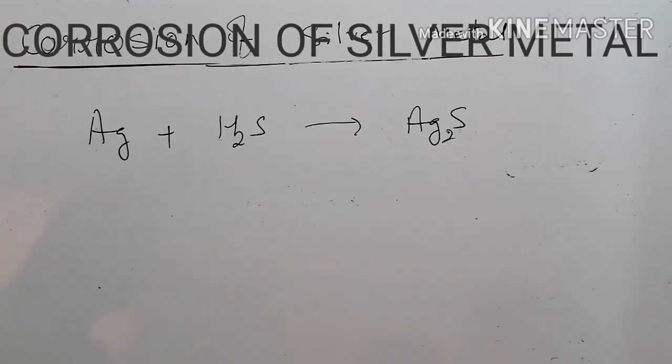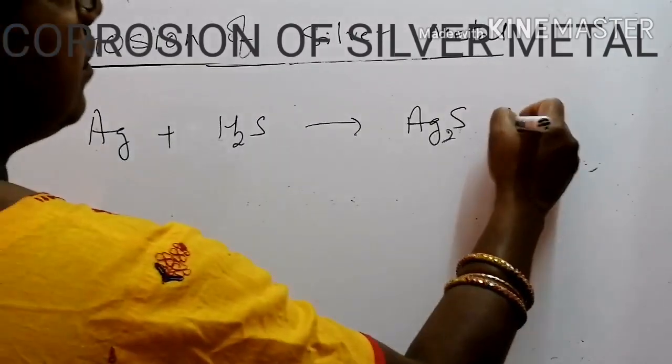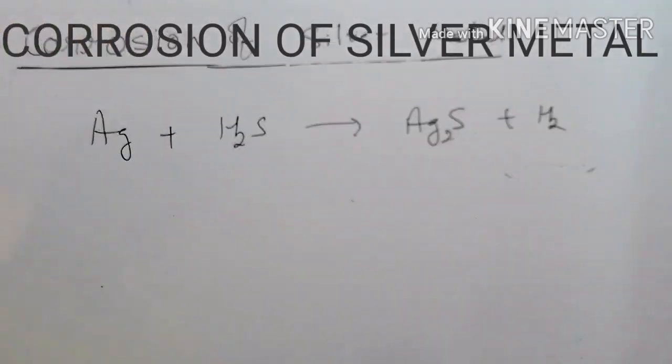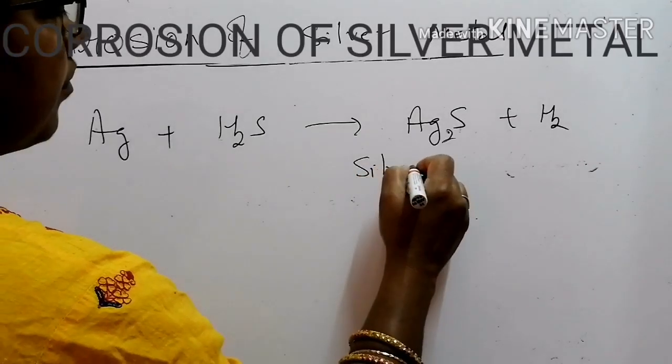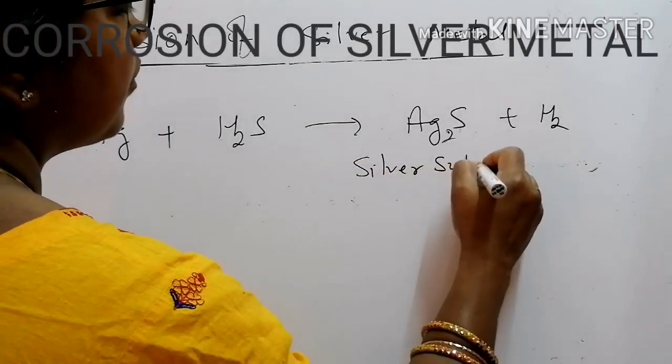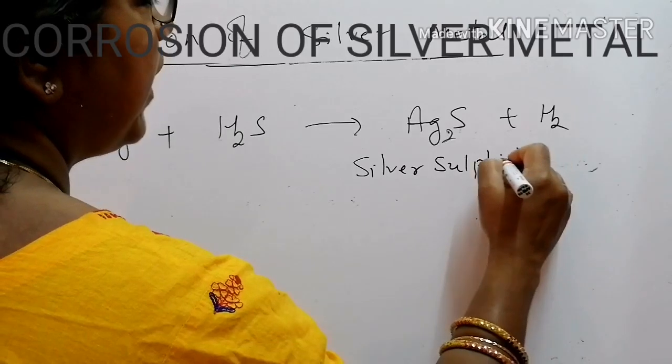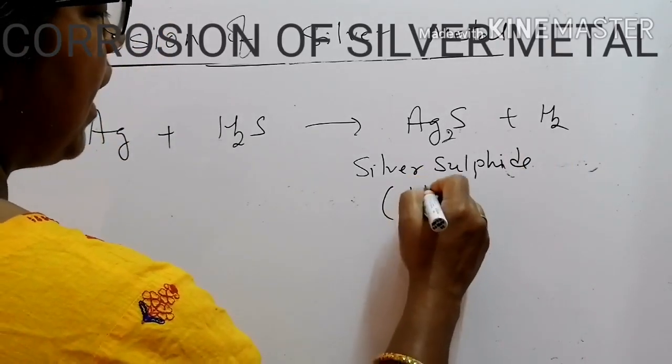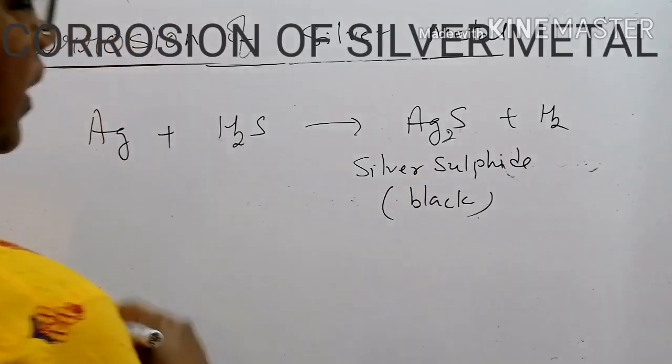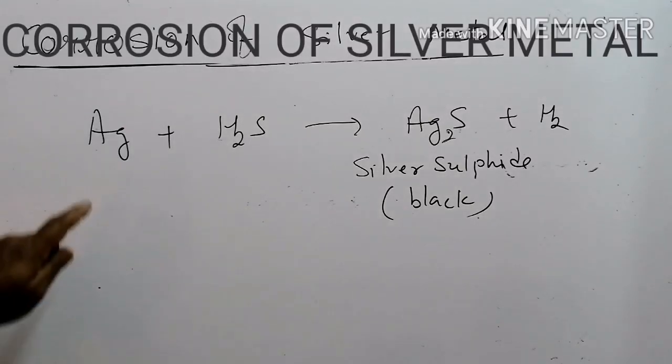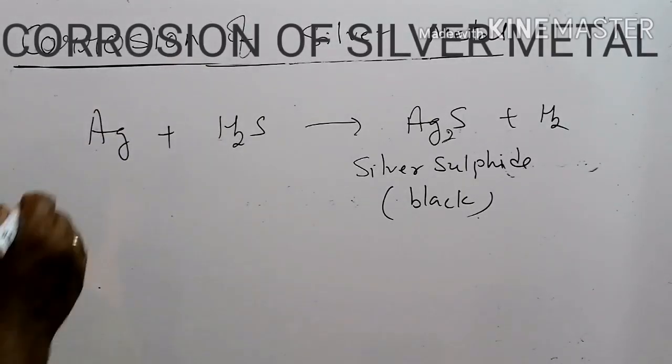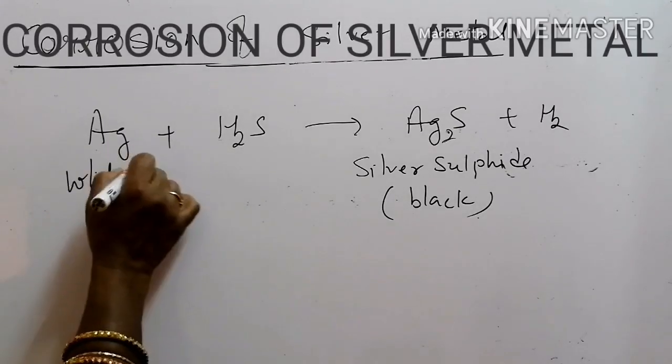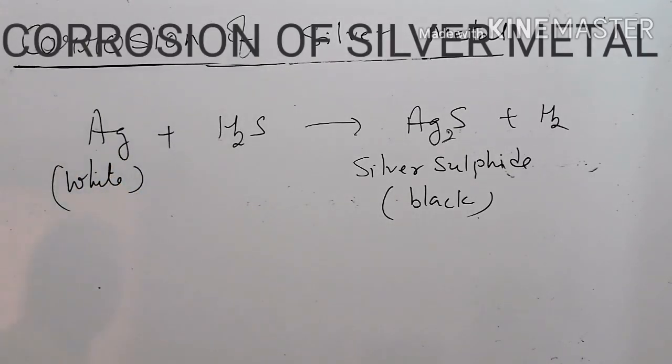So, formula will be Ag2S and liberate hydrogen gas. This silver sulfide formed is black in color. And this, we can call it as corrosion of silver metal. Here, it is white or silver white color and turns to black color.